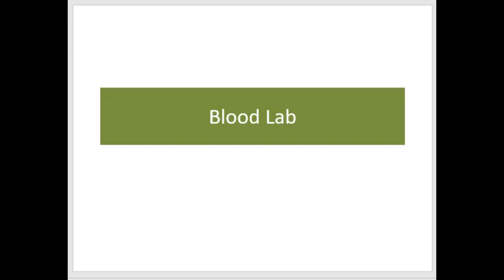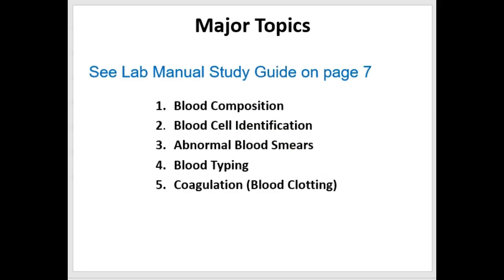Hello, this is Gina Piscitelli with a presentation for the A&P II blood lab that you'll be working on independently the first week at Madison Area Technical College. There are five different topics for this lab and you have a study guide for them on page seven of your lab manual. These topics include looking at the composition of blood, identifying different types of blood cells visually, looking at some abnormal blood smears or abnormal blood composition, blood typing, and blood clotting.